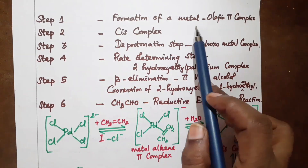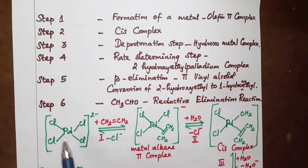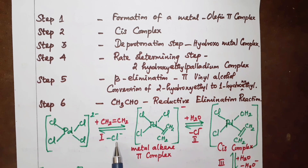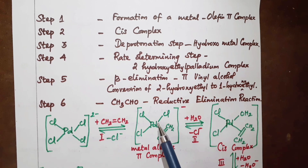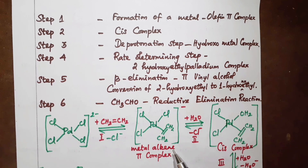Step 1: Formation of a metal-alkene complex. Palladium tetrachloride reacts with ethylene. One chloride is displaced by the ethylene (CH2=CH2) group, forming a metal-alkene pi complex. This is the first step.